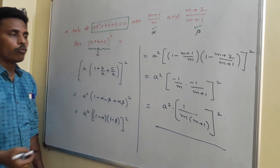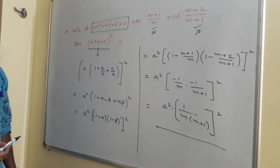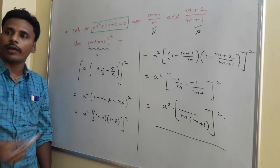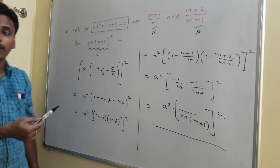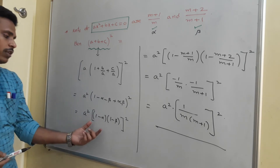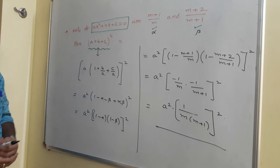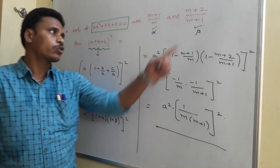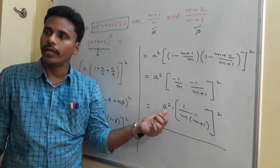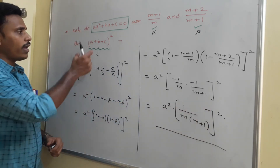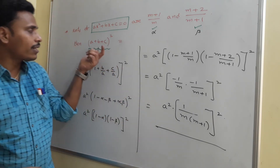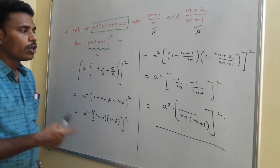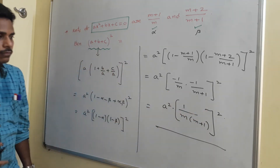We need to eliminate the m terms and express the answer in terms of a, b, c. Notice that alpha = (m+1)/m = 1 + 1/m, and beta = (m+2)/(m+1) = 1 + 1/(m+1). Subtracting: alpha minus beta = 1/m minus 1/(m+1) = 1/[m(m+1)] after taking LCM.